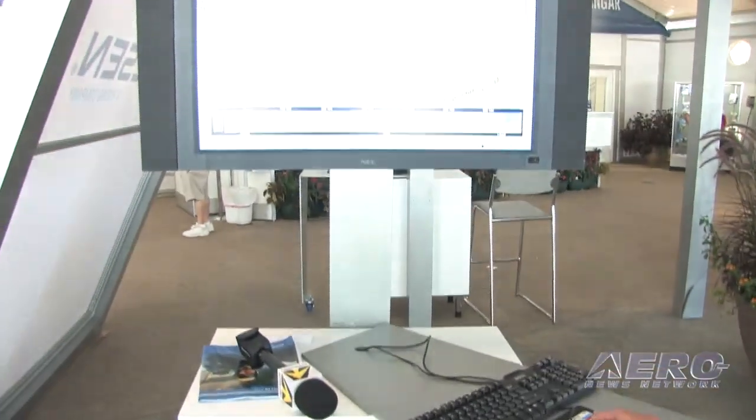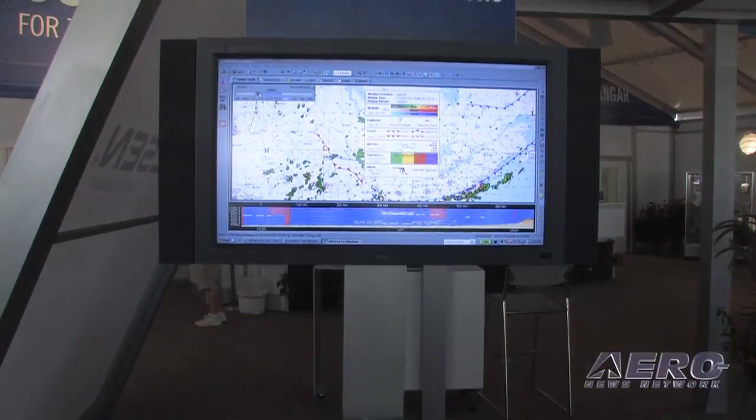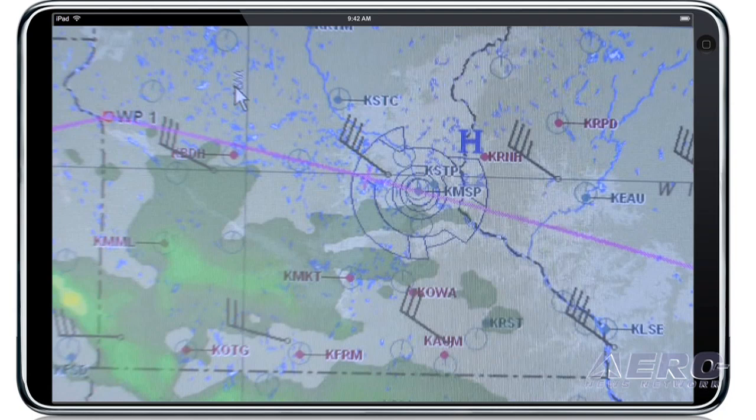Where does it go from here? We think the weather is a big enhancement, but where we really want to take this is more into the mobile computing platform. The iPad would be a logical place to go, to make this so that you not only plan it on the ground but you have it with you when you go up into the cockpit. You can do that with a laptop today, but sometimes those are a little cumbersome. So the tablet market, the iPad market — and who knows where different technologies are going to be in the future — but we want to make sure we keep up with that.